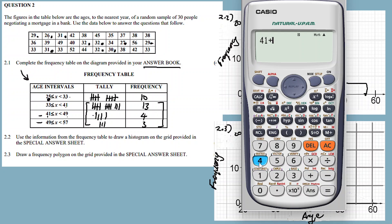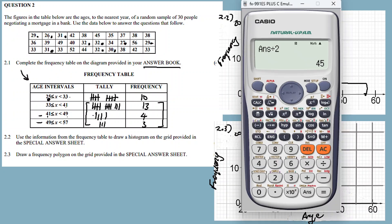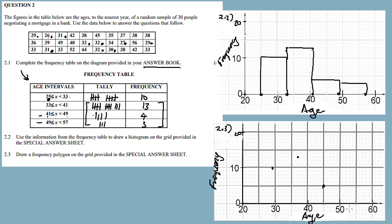Then for the third interval: 41 plus 49 divided by 2 gives you 45 — plot at 45 with frequency 4. And for the fourth interval: 49 plus 57 divided by 2 gives you 53 — plot at 53 with frequency 3.